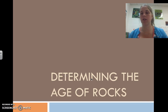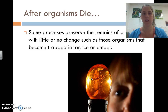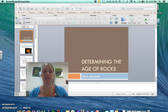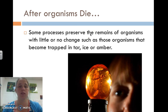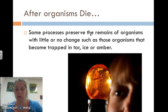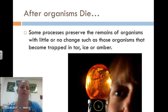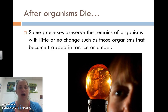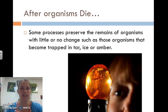We are going to talk about determining the age of rocks and why that's important. After organisms die, some processes preserve these specimens with little to no change, such as those that become trapped in tar, which is like oil, ice, or amber. For example, there was a baby woolly mammoth trapped in ice for all those years. And like in Jurassic Park, organisms can get trapped in tree sap, which eventually becomes a hard rock-like substance like amber, helping preserve them completely intact so they don't decompose at all.